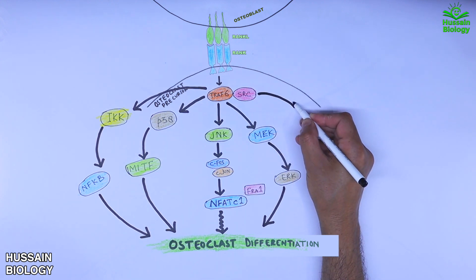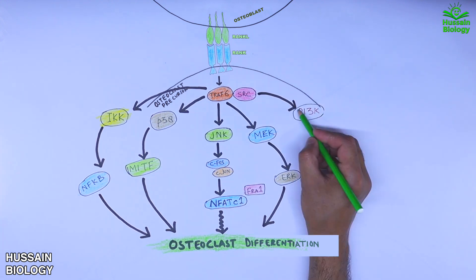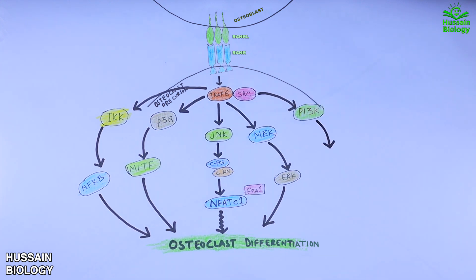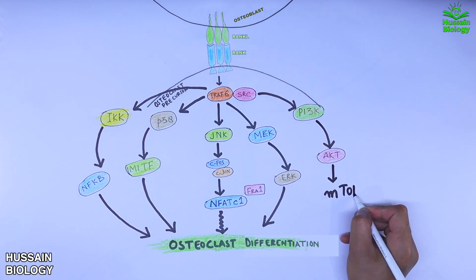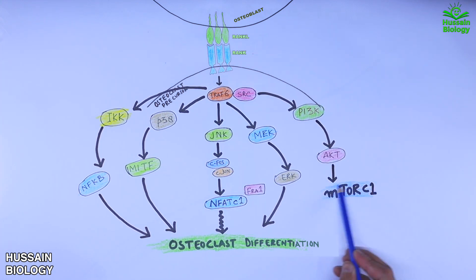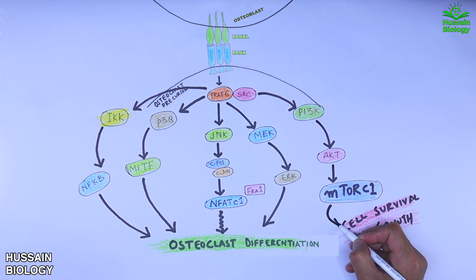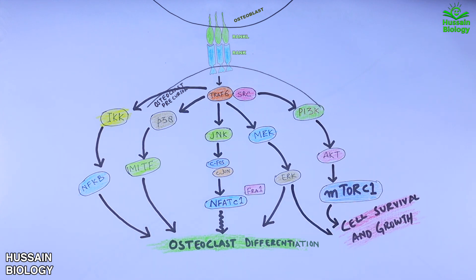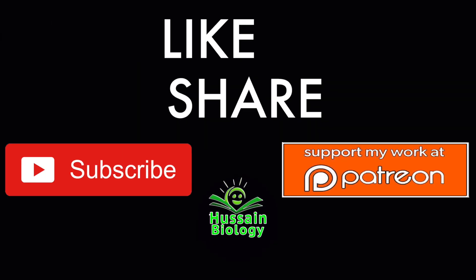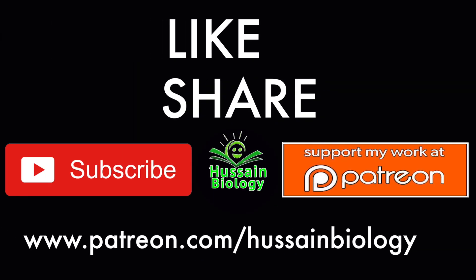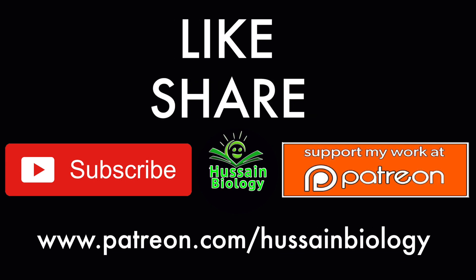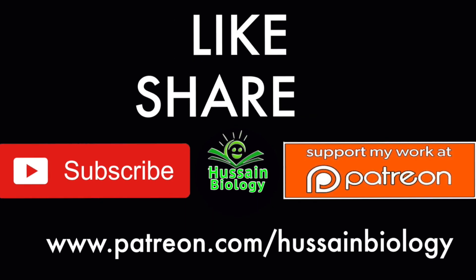Finally, we also see crosstalking of pathways in the form of PI3K activation, which activates AKT, and AKT activates mTORC1 — this pathway is for cell survival and growth. This is how the RANK/RANKL/OPG signaling pathway drives osteoclast differentiation in the bone remodeling process. If you like the video, give it a thumbs up, consider supporting on Patreon or YouTube, and make sure to subscribe.